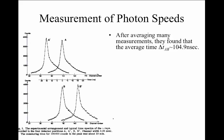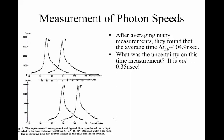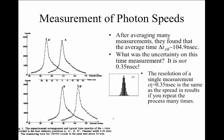After averaging many measurements, they found an average time to take for a photon to travel between point A and point B to be about 105 nanoseconds. Now, what would be the uncertainty on this measurement? It's not actually 0.35 nanoseconds. 0.35 nanoseconds is the time uncertainty for a single measurement, but since the experimenters averaged many measurements, we can think of that 0.35 nanoseconds as the spread of results if you histogrammed the process that they measured many times over.